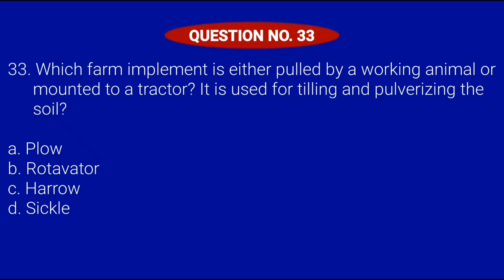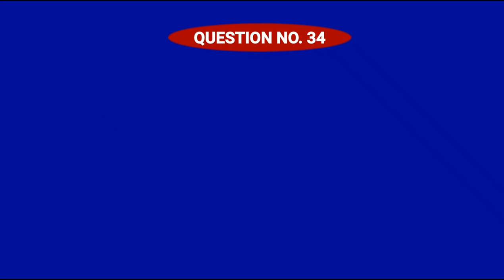Question number 33. Which farm implement is either pulled by a working animal or mounted to a tractor? It is used for tilling and pulverizing the soil. Letter A, Plow; Letter B, Rotivator; Letter C, Harrow; or Letter D, Sickle. Correct answer is Letter C, Harrow.